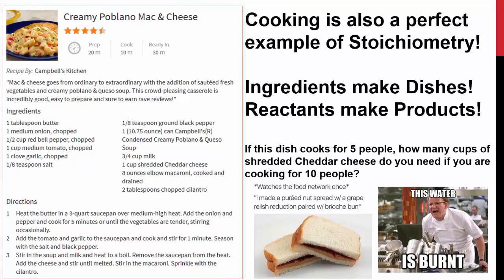And cooking. Cooking is another example of stoichiometry. Ingredients, which we can call reactants, make dishes, which we can also call products. Looking to the left, I have this awesome recipe for creamy poblano mac and cheese. Totally trying that out. It's really good. It's like a nice, hot, spicy mac and cheese, and if you add other things to it, it's even better.